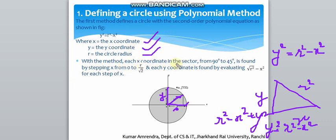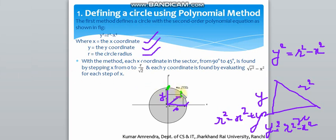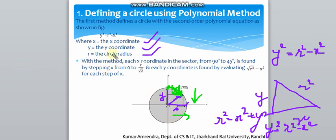With this method, each x-coordinate in the sector from 90 degrees to 45 degrees is found by stepping x from 0 to r/√2, and each y-coordinate is found by evaluating √(r² - x²) for each step of x. So for one step of x, y decreases — we increase x step and reduce y step. This is the first method of defining a circle using the polynomial method.